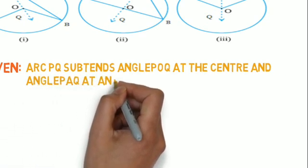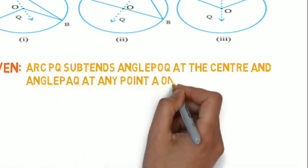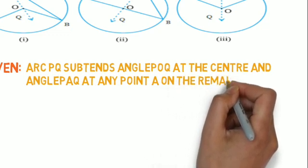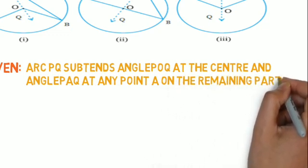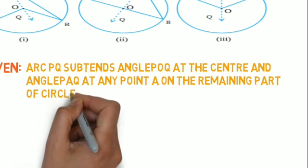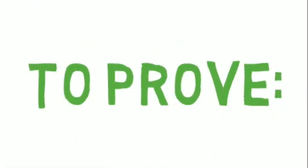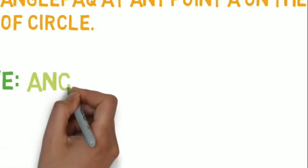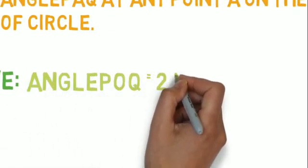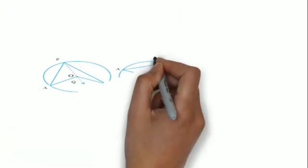Now move to 'To Prove'. What we have to prove here is that angle POQ is equal to 2×angle PAQ, because that's what the theorem states. 'To Prove' and 'Given' are very much necessary. Now let's move to the proof.